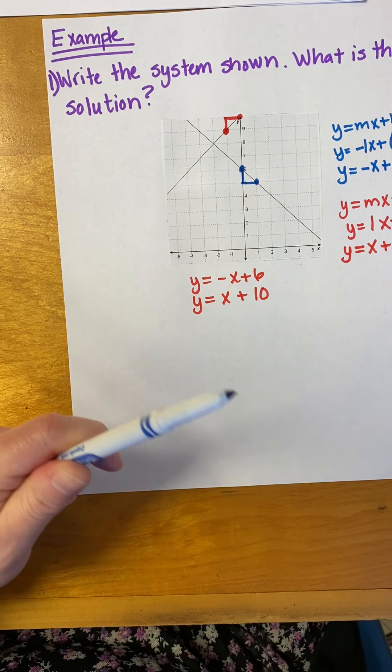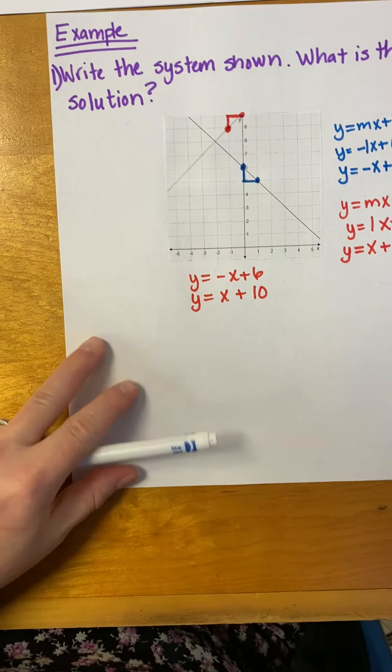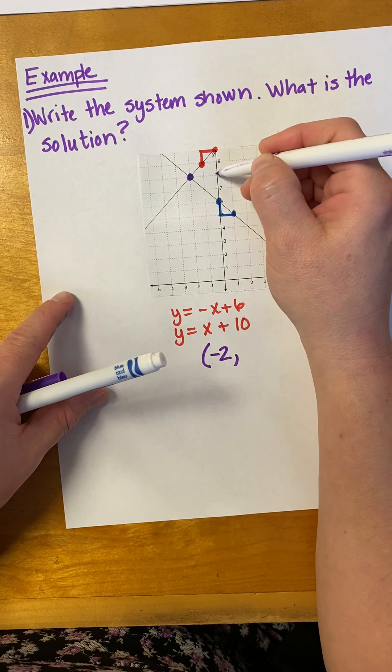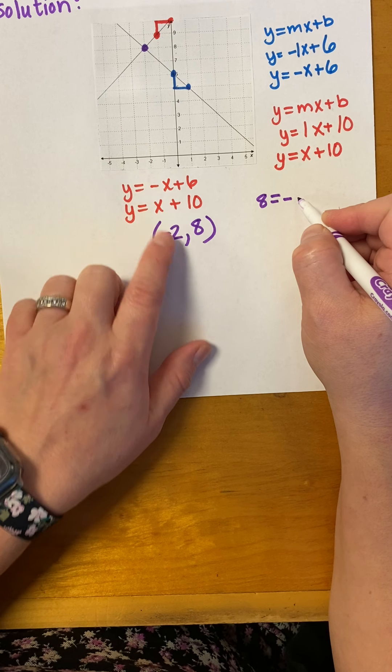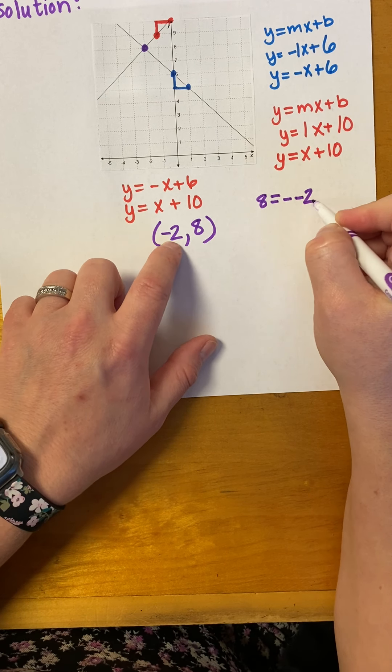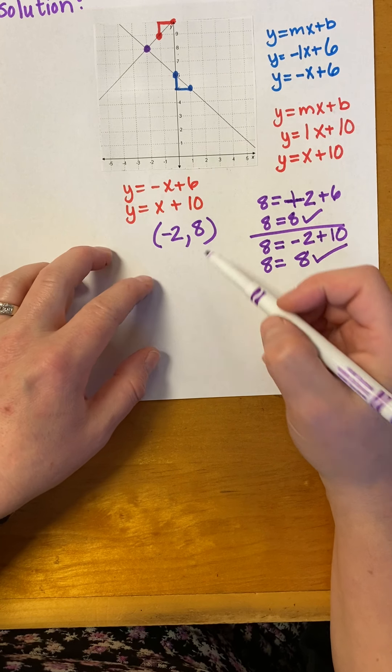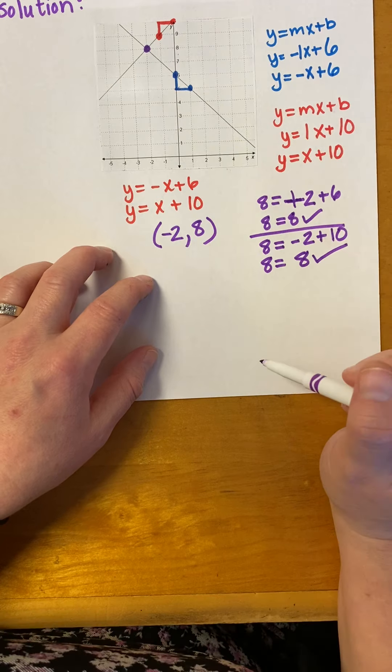Now what is the solution to this linear system? That's where they're crossing each other, right here. The x-coordinate lines up with negative two, and the y-coordinate is eight. Let me show you what I mean by plugging it in. If we plug in eight for y and negative two for x: eight equals negative (negative two) plus six, which gives eight equals two plus six, which is eight. That's a true statement. Now in the other equation: eight equals negative two plus ten, which is also eight. True statement. So you see how when you plug in the solution, it makes both equations true statements.